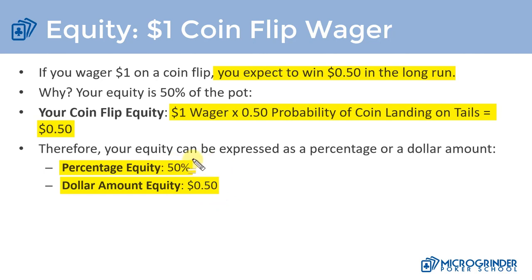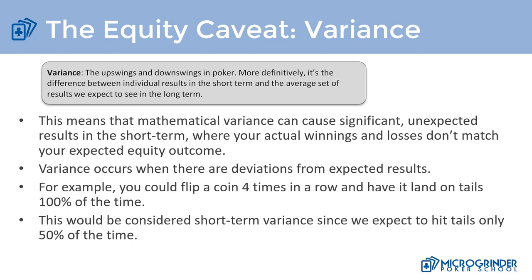Now let's talk about something called variance — what I call the equity caveat. Variance is simply the upswings and downswings in poker: when we're running good and when we're running bad. More definitively, it's the difference between the individual results we see in the short term compared to the average set of results we expect to see in the long term.